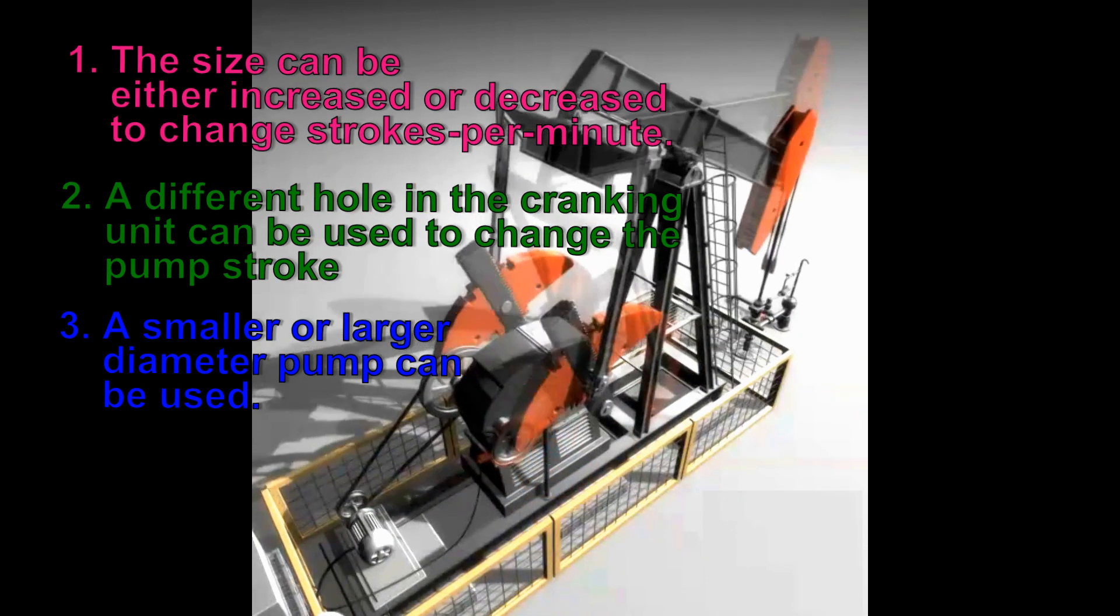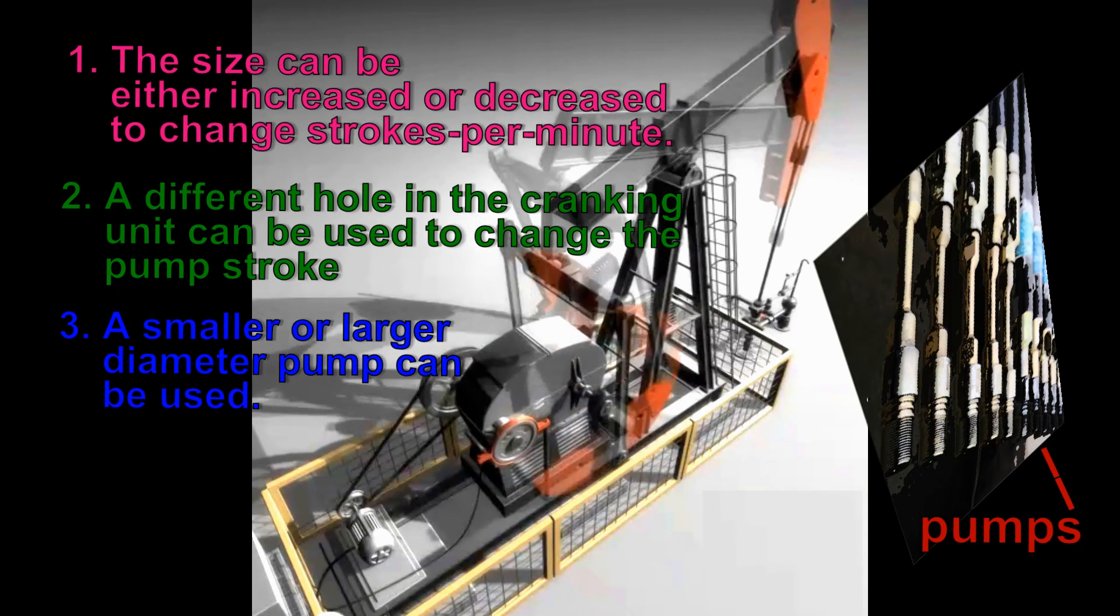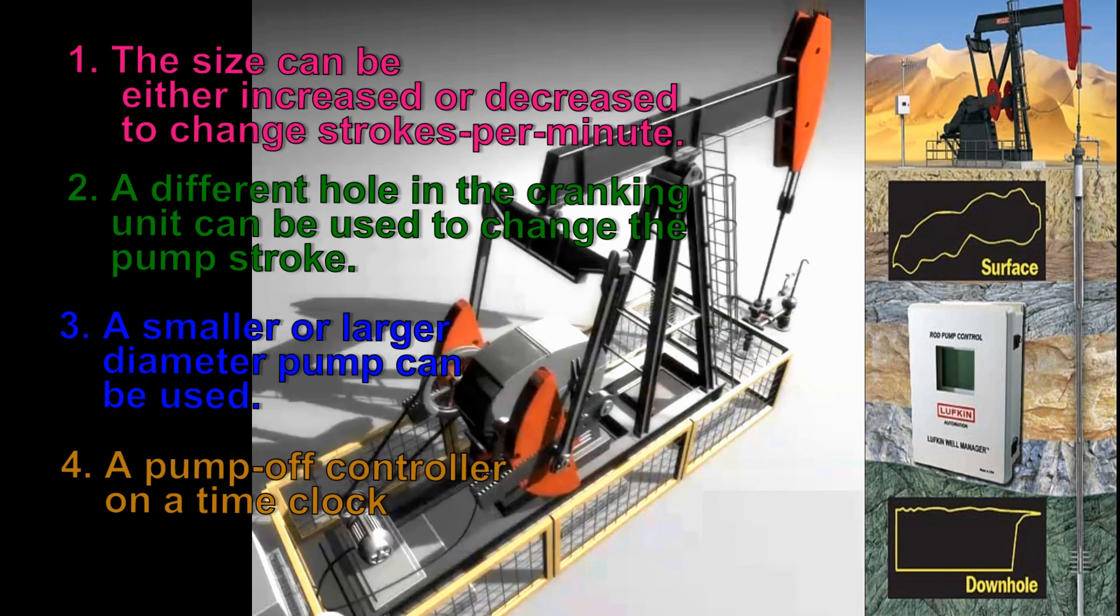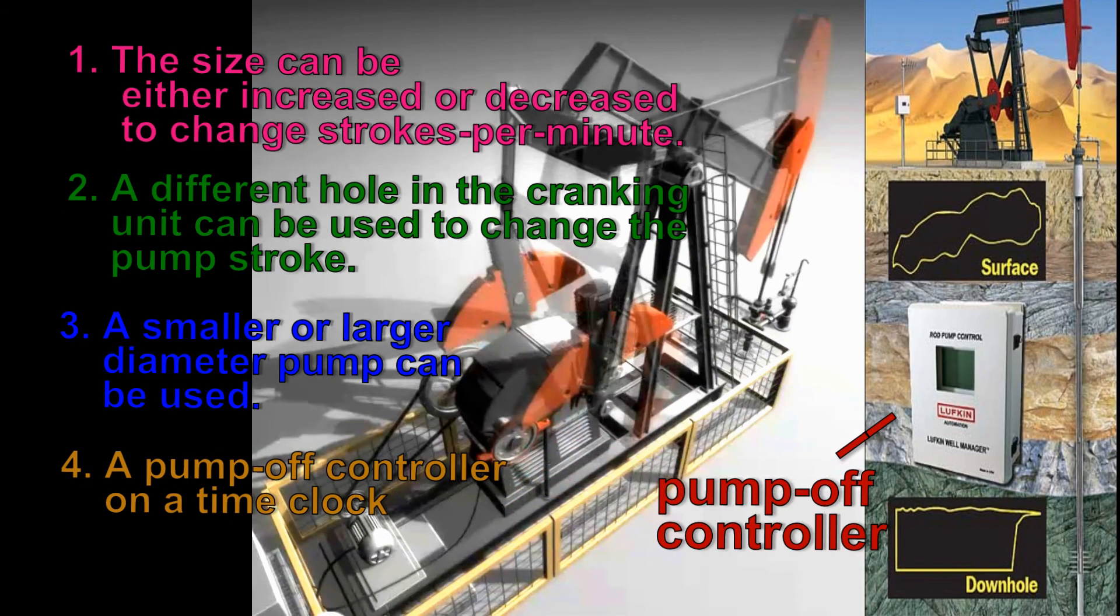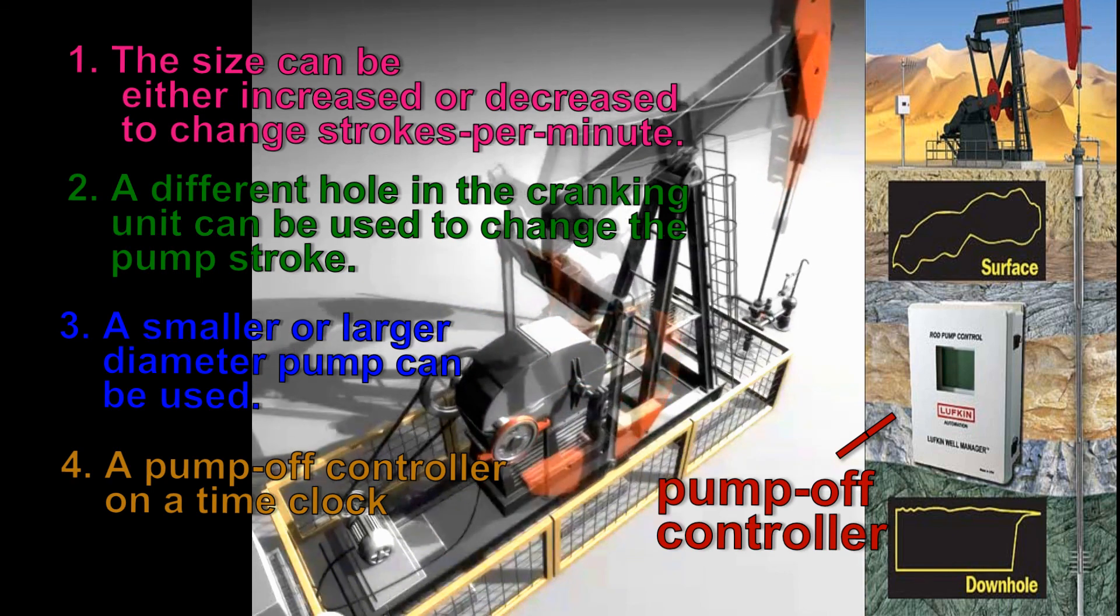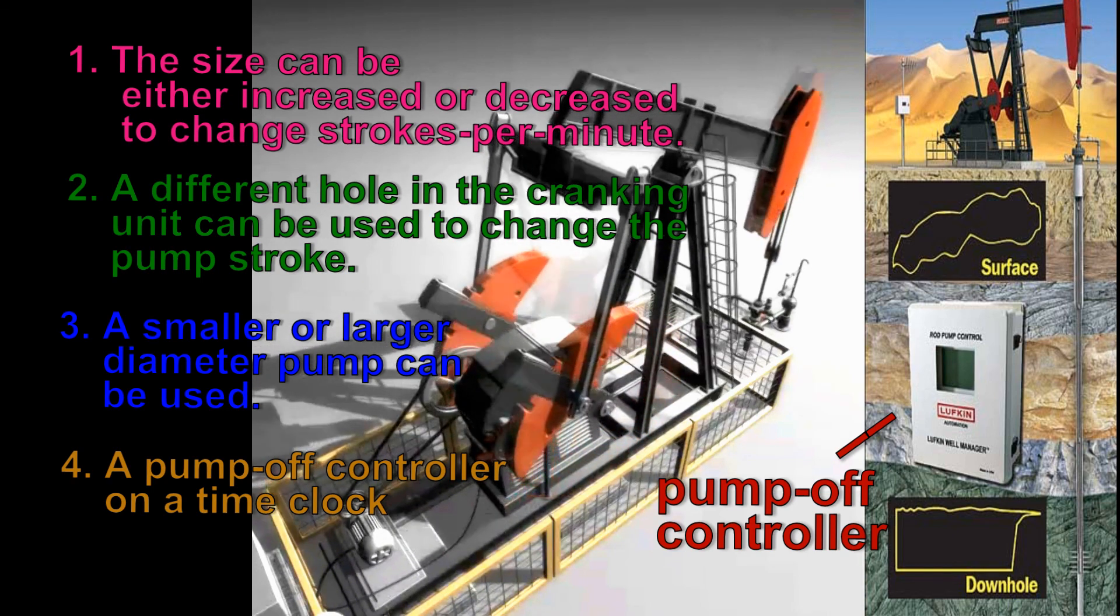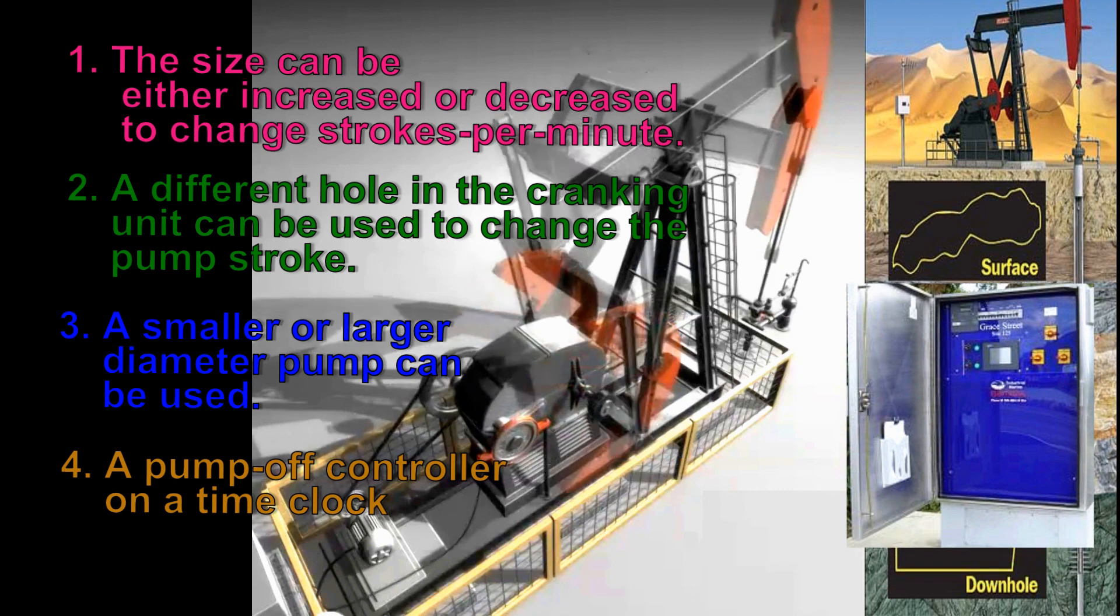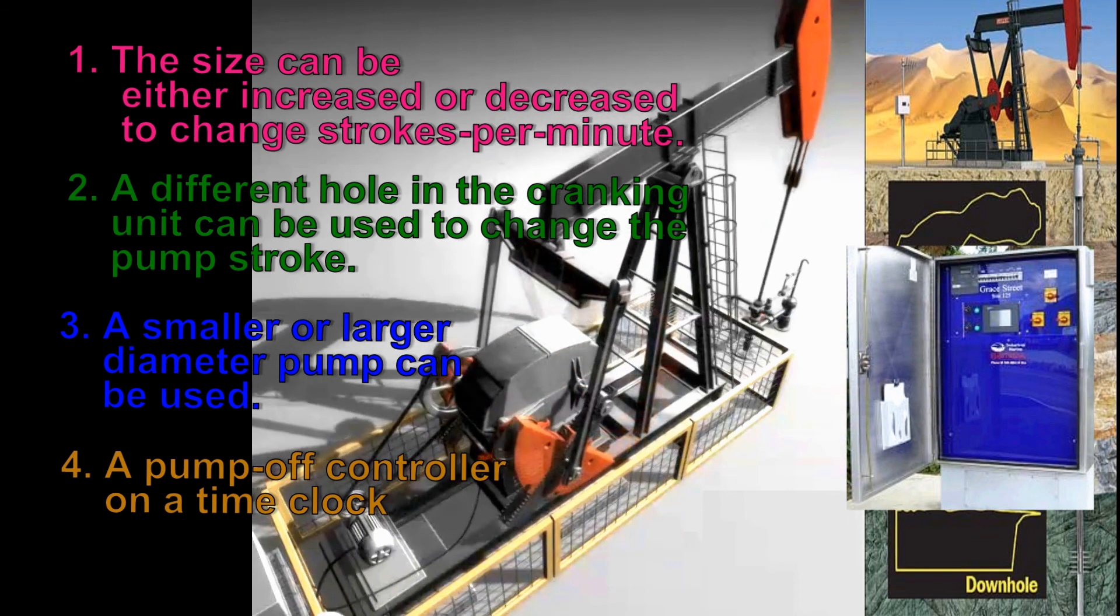Number three, a smaller or larger diameter pump can be used. Number four, a pump-off controller on the time clock that automatically turns an electric motor pumping unit on and off can be used to optimize pumping loads.